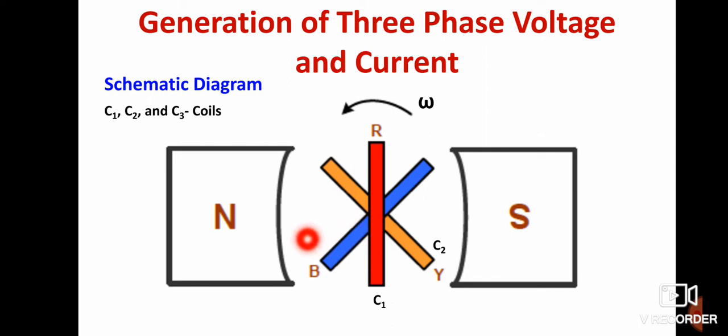These are the three conductors. The angle between the conductors is 120 degrees apart. The conductors are rotating at an angular speed of omega, which is the angular speed.